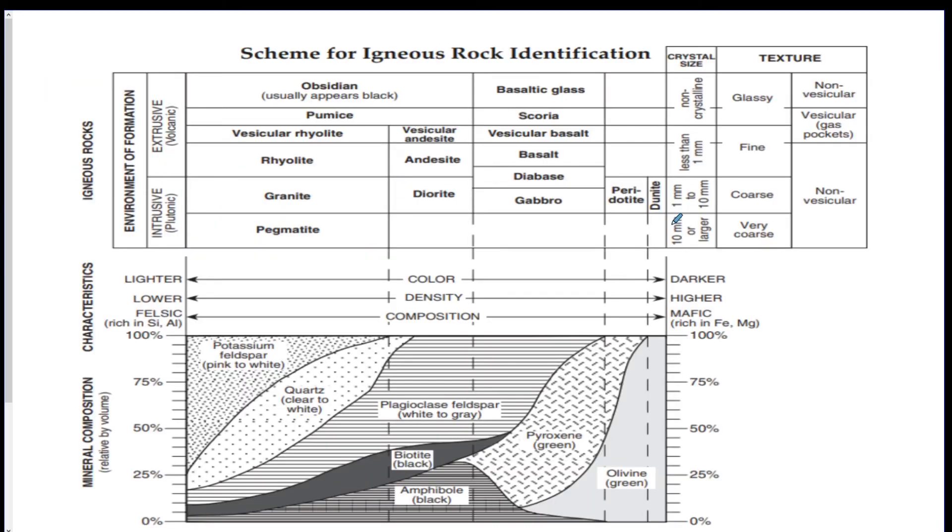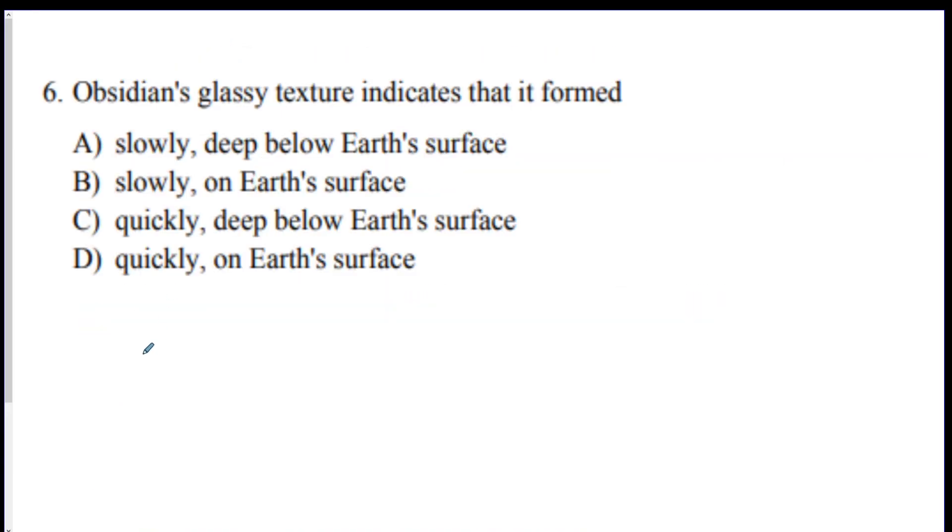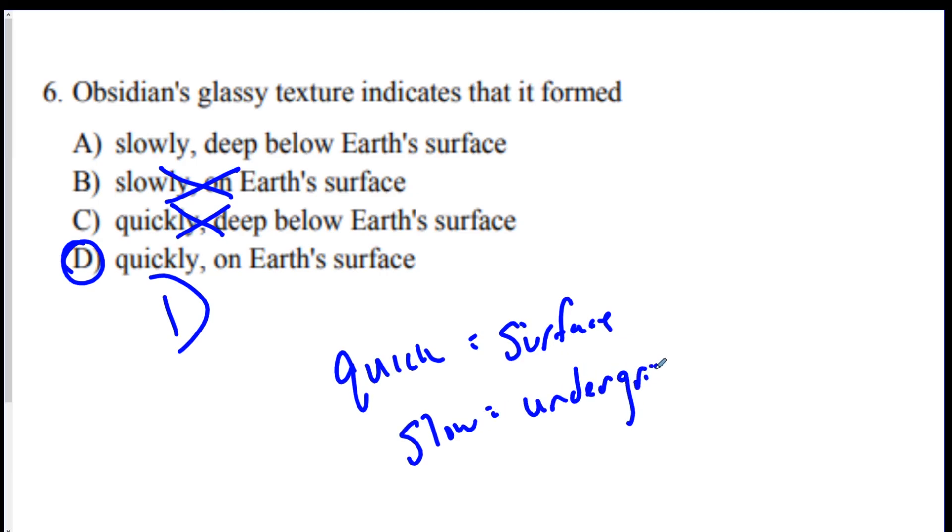Number six. Obsidian's glassy texture indicates that it formed where? We wrote this on the chart as a little note. The smaller the crystal size, means it's extrusive, which means it formed on the surface, and it cooled really quick. So D is the best answer. Things that cool deep below the Earth's surface slowly would be like granite. If it's quick, it's always on the surface, and if it's slow, it's always underground. It can never be intertwined.